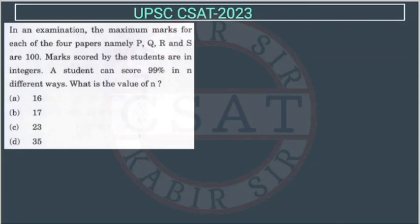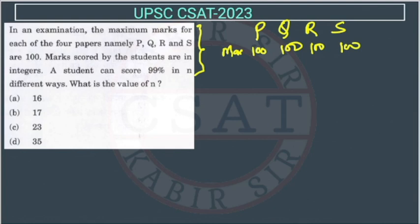Now, let us do these questions from UPSC CSAT 2023. In an examination, the maximum marks for each of the four papers namely P, Q, R and S are 100. There are four papers P, Q, R and S and the maximum marks are 100 for each. Marks scored by the student are integers. A student can score 99% in n different ways. What is the value of n? First of all, this question is from permutation and combination. I have seen like no coaching institute provided the correct answer for this question and no one provided even the solution. Let us see how we will do it.